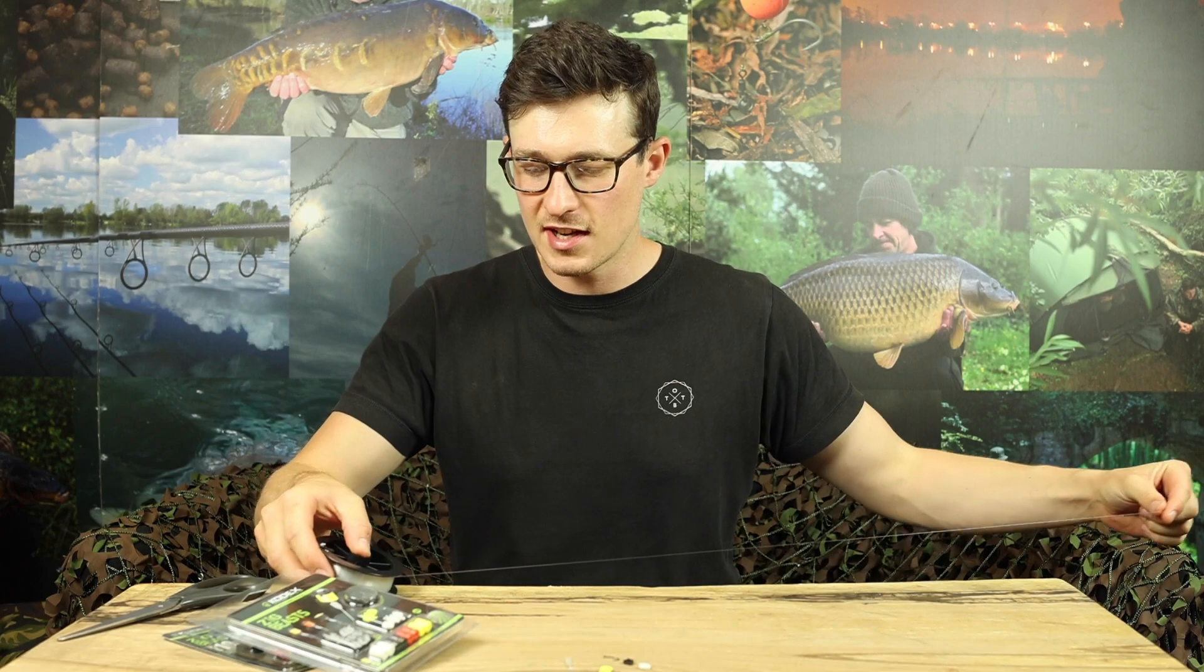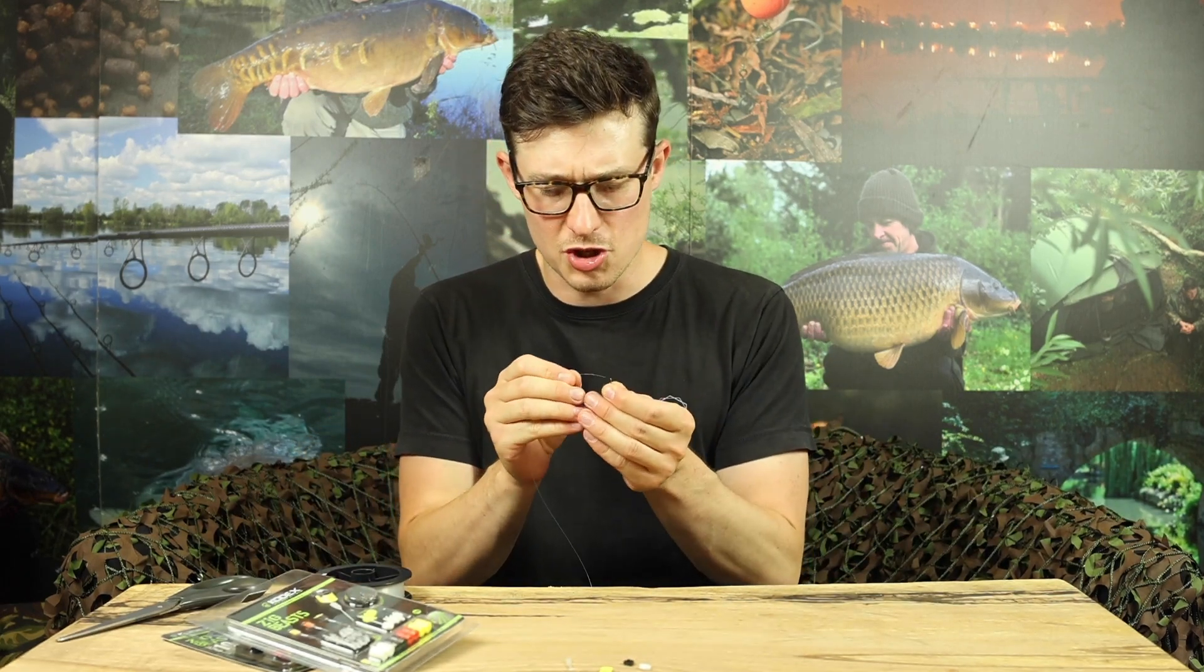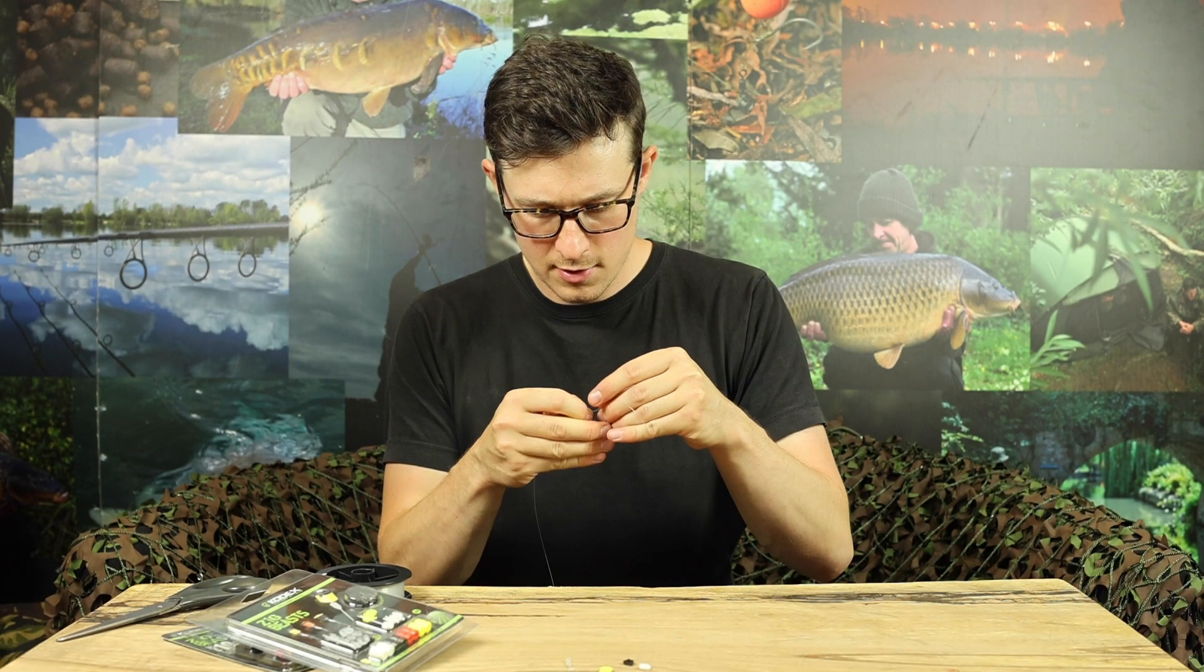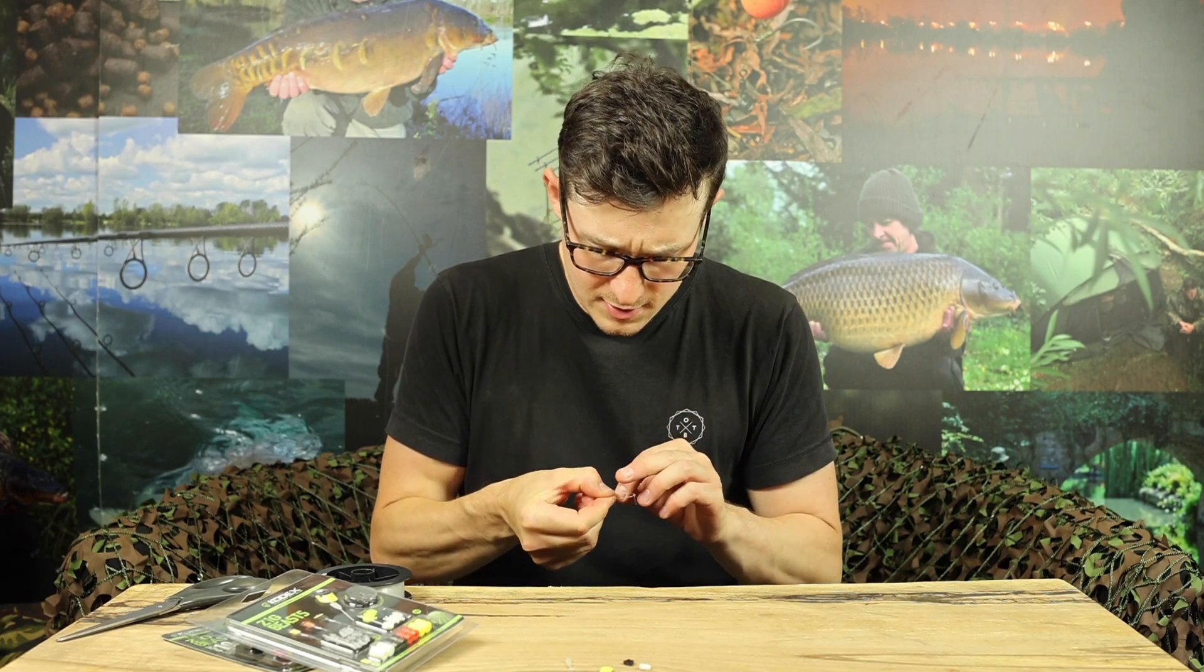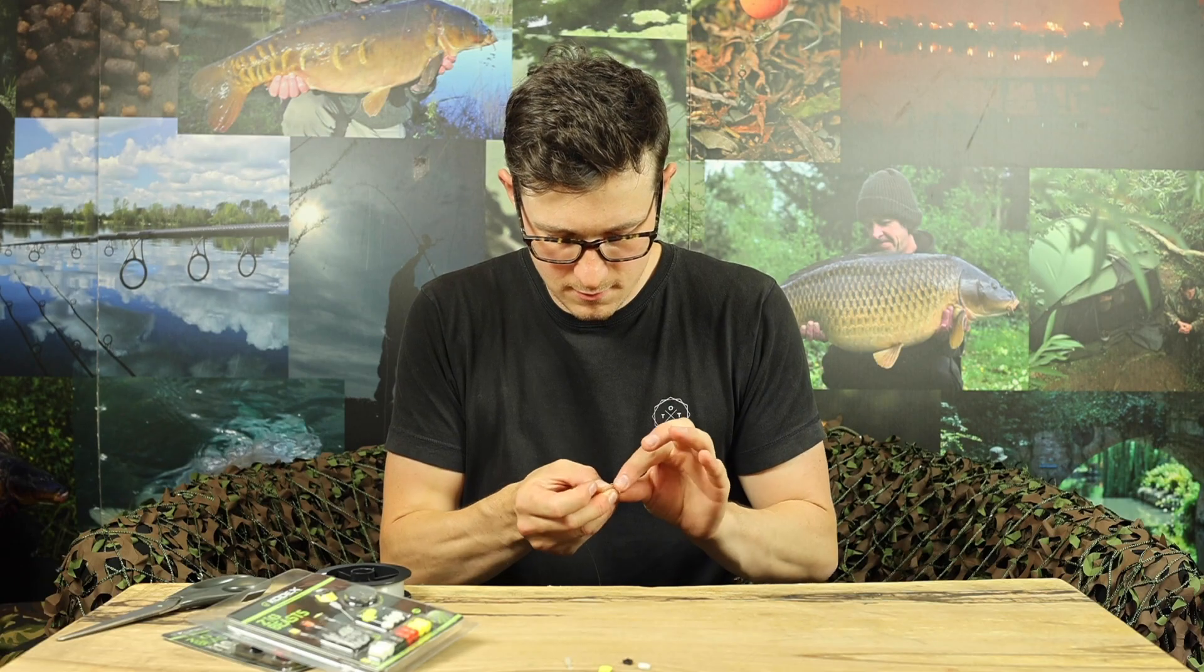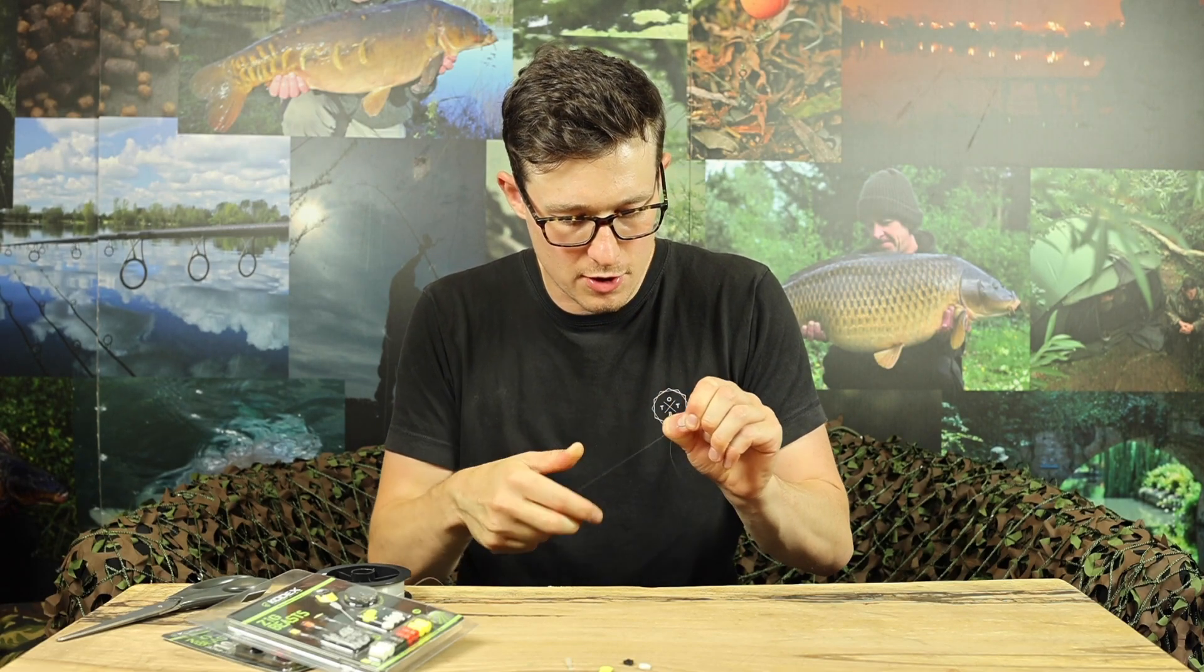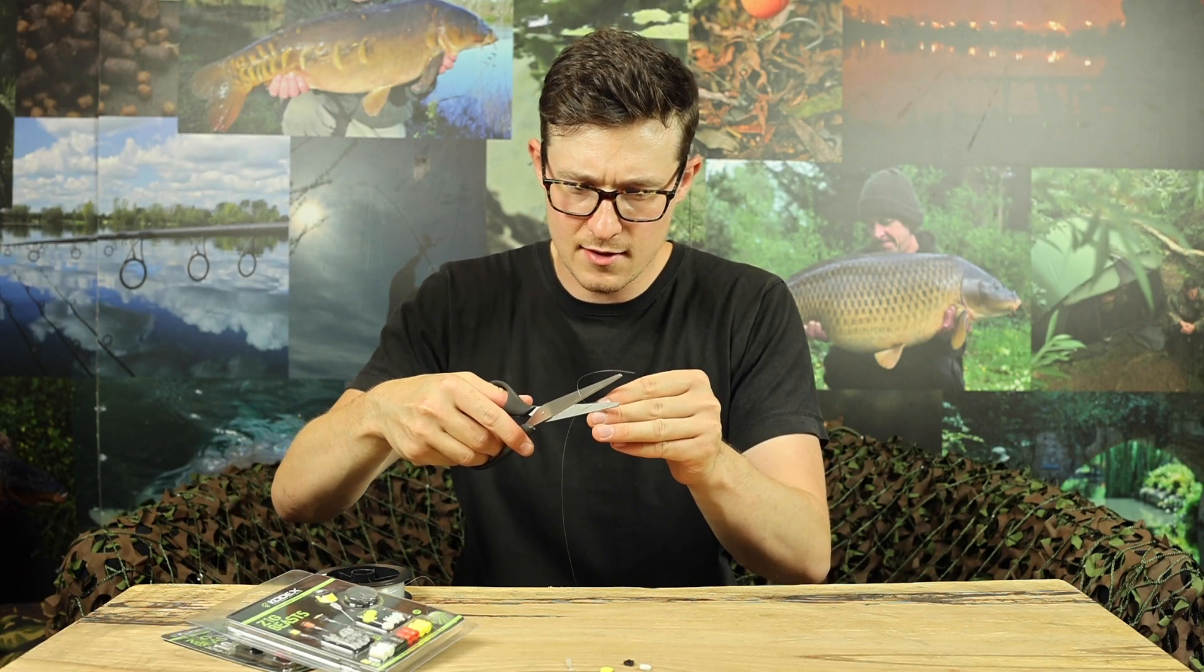So first off get yourself some zig line and your size 10 genomic hook. All that you do to start off with is just tie that hook straight onto the end of the zig line. I like to use a Palomar for this because it's nice and strong with lightweight monos. Use a bit of saliva there to just moisten the knot and tease it down into shape. There you go, it's perfect. Just trim off the tag end.